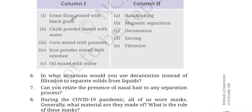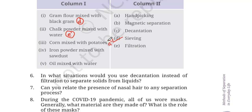Now coming to match the following. Gram flour mixed with black gram: gram flour has very small particle size compared to black gram, and they are both solid, so we use sieving — answer is D. Chalk powder mixed with water: separated using filtration, which is more efficient — answer is E. Corn mixed with potatoes: done by handpicking — answer is A. Iron powder mixed with sawdust: magnetic separation — answer is B. Oil mixed with water: decantation, as the oil layer separates from the water layer — answer is C.